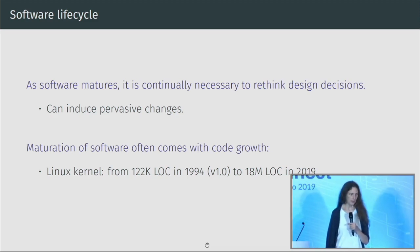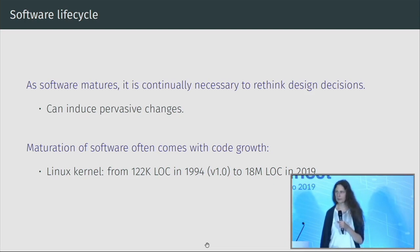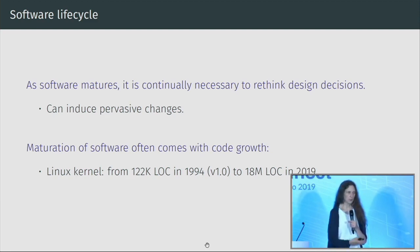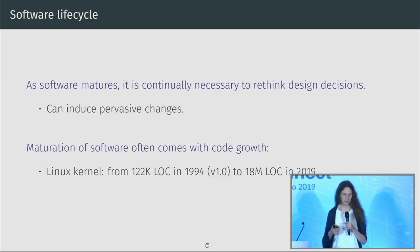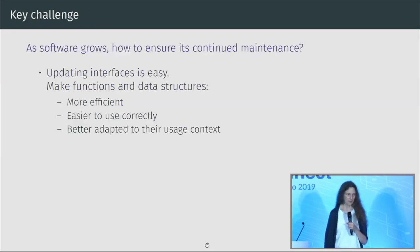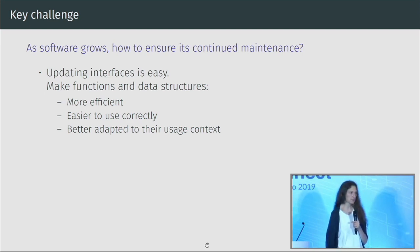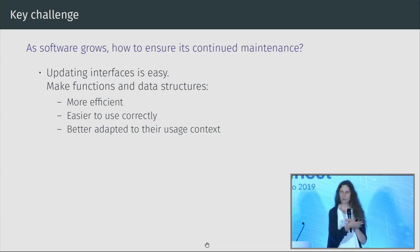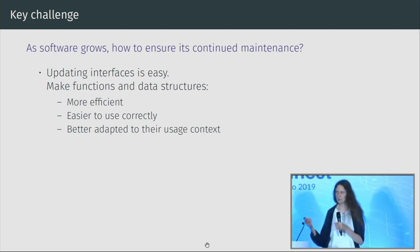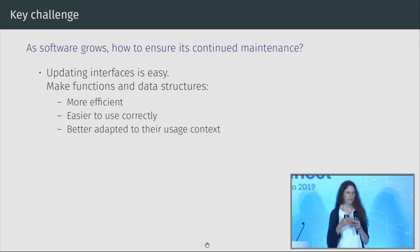A side effect of software maturity is that as you get feature requests, fix bugs, and realize design decisions weren't good, the code gets bigger and bigger. In 1994 the Linux kernel was only about a hundred thousand lines of code; today it is over 18 million. What was manageable at a hundred thousand lines is simply not manageable for one person to understand at 18 million.